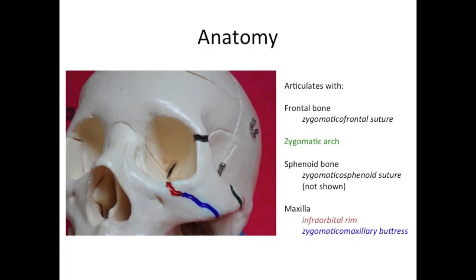The zygoma is a complex bone as it articulates at several places with other bones. The black line shows the zygomaticofrontal suture or ZF suture, which is the point of contact between the zygoma and the frontal bone. The green line shows the suture between the zygoma and the zygomatic arch, which is a projection of the temporal bone. The zygoma also joins with the sphenoid bone and the maxilla, and with the maxilla at the zygomatico-maxillary suture or buttress. Note the proximity of the infraorbital foramen.